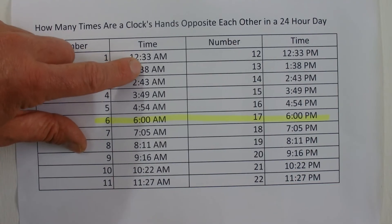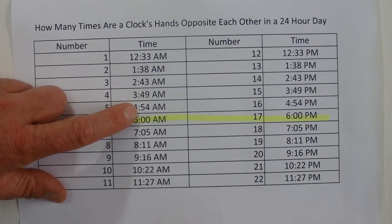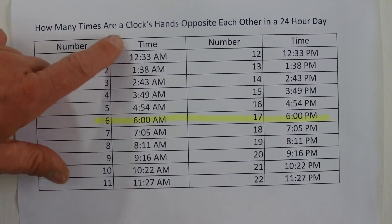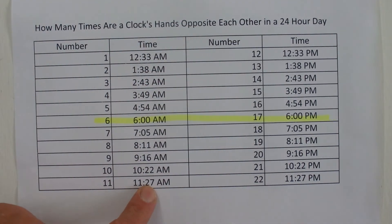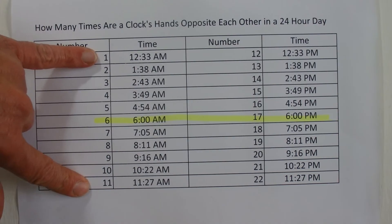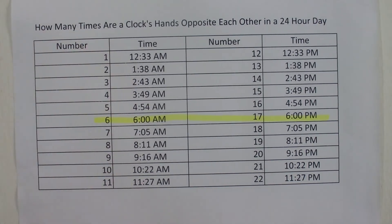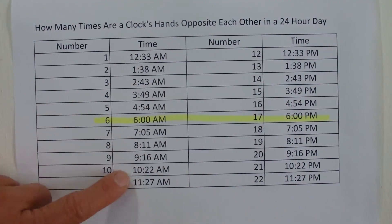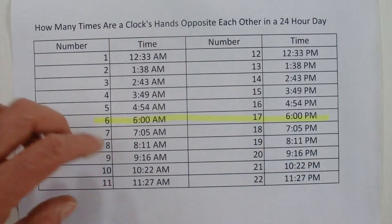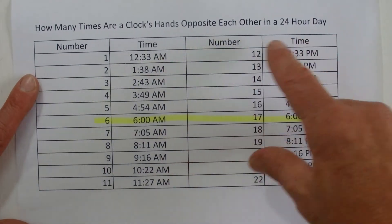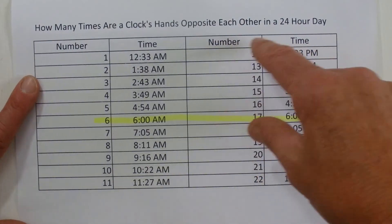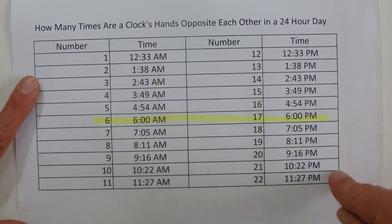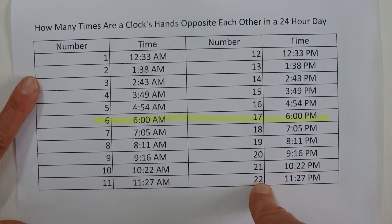You can see that the times are advancing by about 65 or 66 minutes at a time. In the morning before noon, the last time the clock's hands are opposite each other is at 11:27. That's the first 11 times in the 24-hour day before noon. Then rather than being a.m., it becomes p.m. — so you've got 11 in the morning and another 11 times in the afternoon, evening, and into the night, giving you a total of 22 times.